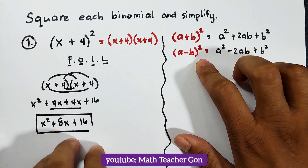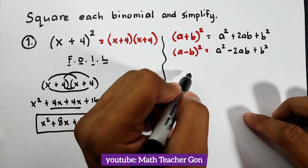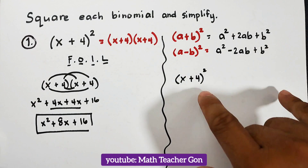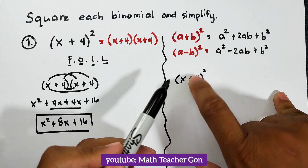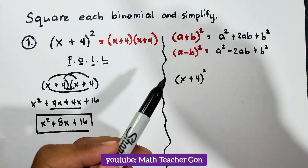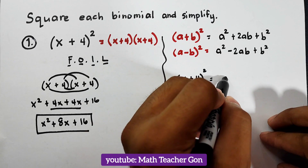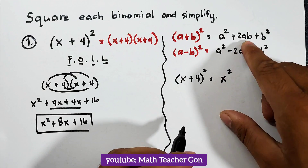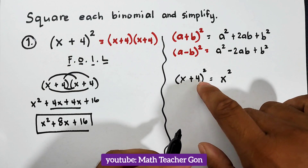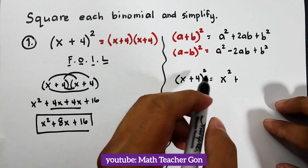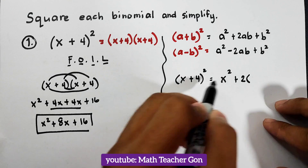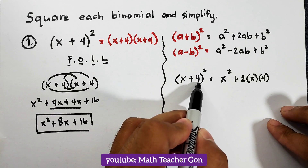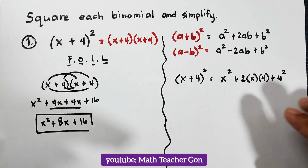Now let's apply this pattern to the example x plus 4 squared, compared to the FOIL method. The middle term is positive, so we use the first pattern. First term: x squared. Second term: copy the positive sign and always multiply by 2, times your first term x, times your second term 4. Lastly, square the last term: plus 4 squared.